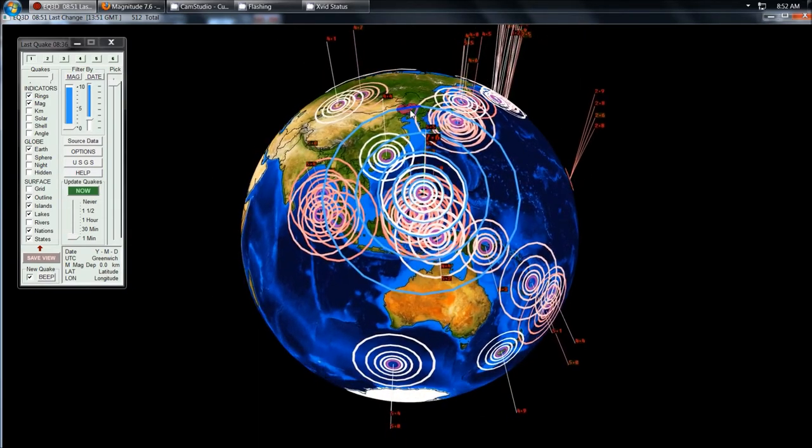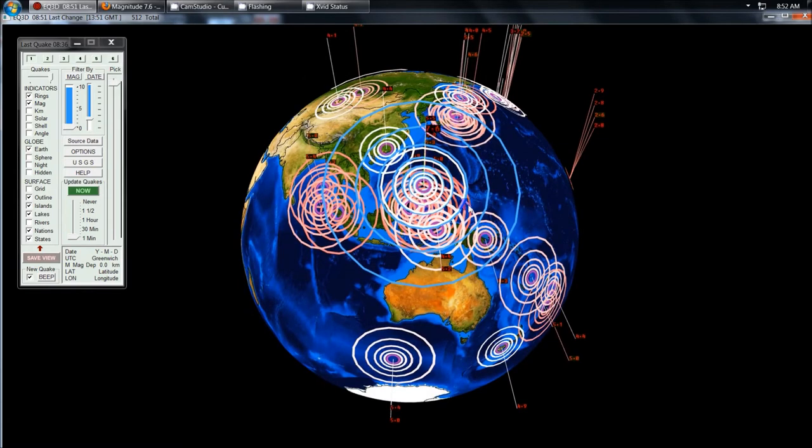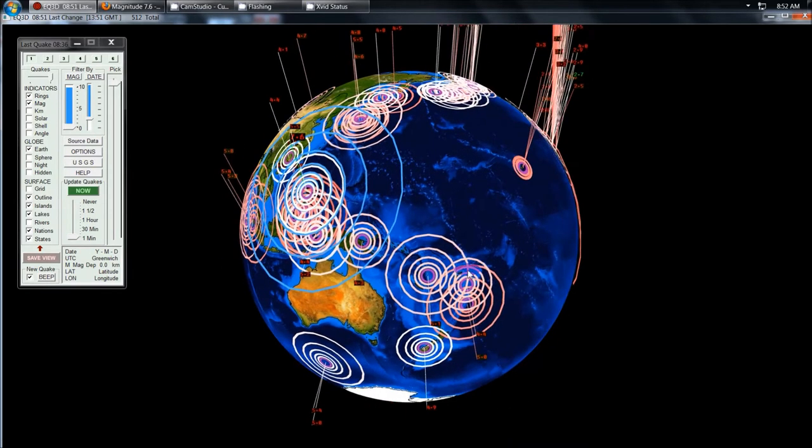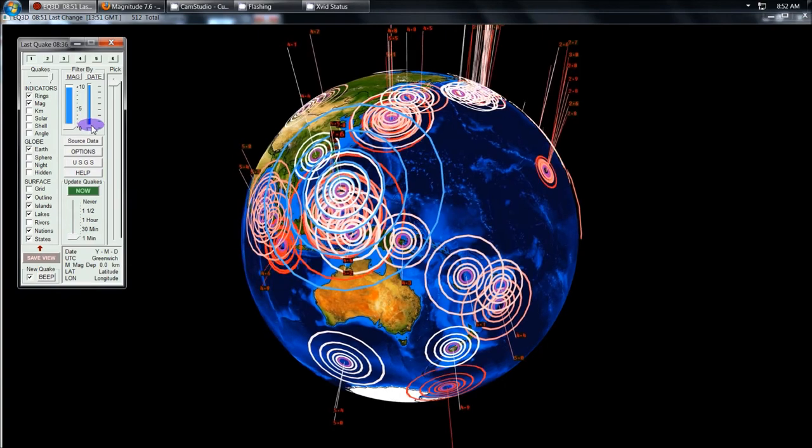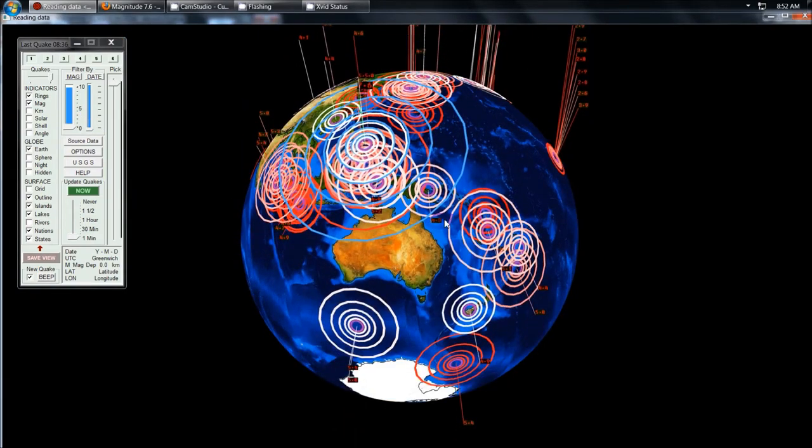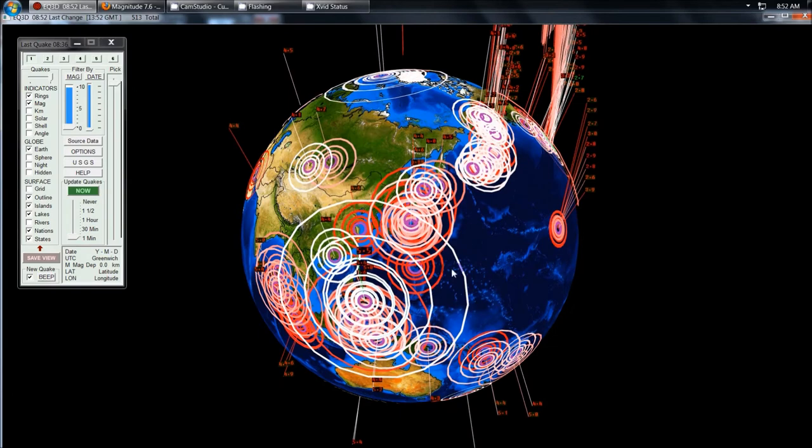Now we see again, 7.9 downgraded to 7.6 in the West Pacific. Let me just go ahead and turn it down for the full seven days here, and you see the multiple 4 and 5.0 earthquakes in the West Pacific that built up to this large earthquake here.